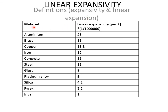Here is a table summarizing the linear expansivity rates for different metals. Aluminum has the highest rate of 26, followed by brass at 19, copper at 16.8, then iron, concrete, steel, glass, platinum, alloy, silica, pyrex, and finally invar. These linear expansivity values are applied in making certain instruments and substances important in physics, such as the bimetallic strip.